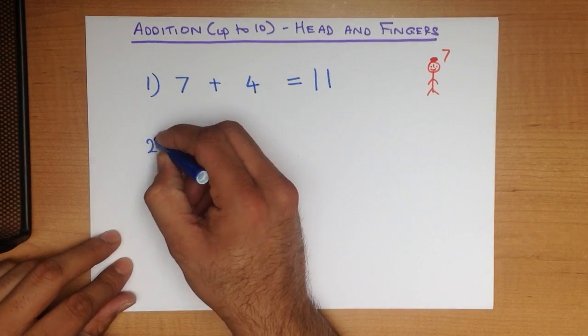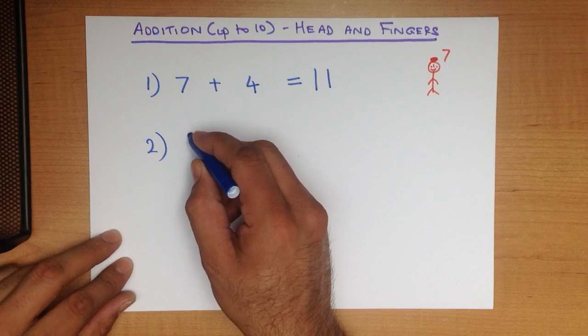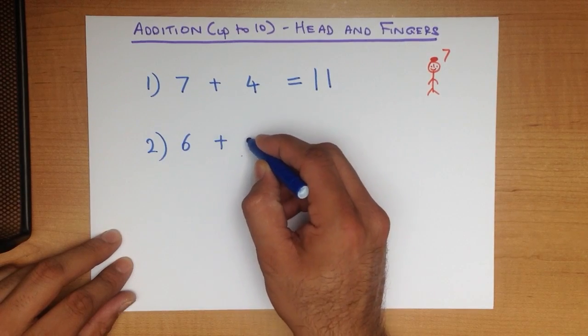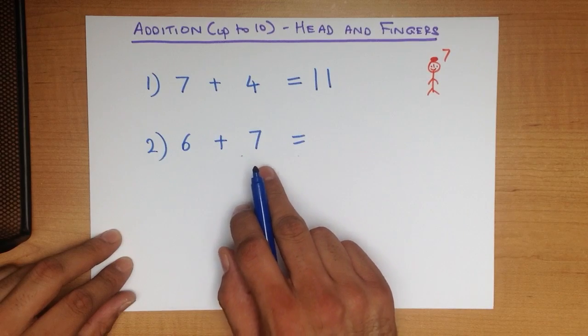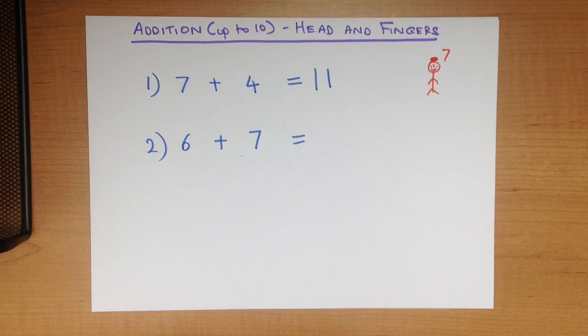Let's work through a second example. What is 6 plus 7? 6 plus 7. Now again, we do the same thing.